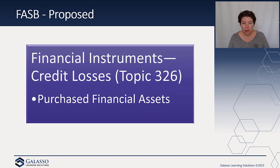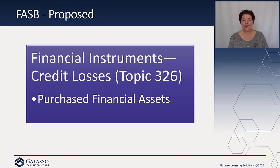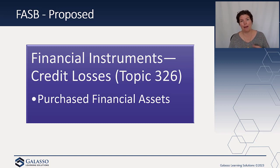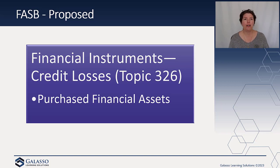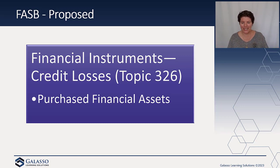FASB also put out a proposal on purchased financial assets. This is really in response to ASU 2016-13, which introduced the CECL option. One of the things that standard introduced is that if you are purchasing an asset, you had to evaluate whether there was more than insignificant deterioration in credit and whether you had purchased what they call PCD — purchased credit deteriorated — assets. There were two models depending on whether there was or was not deterioration. People came back and said that's a lot, it's very complex, can we simplify this? So there is a proposal to require all acquired financial assets, with limited exceptions, to always follow just the existing gross-up approach. That would be a streamlining of the CECL model.